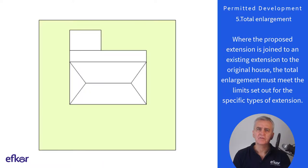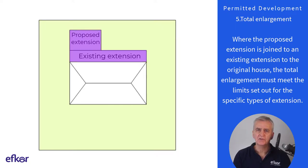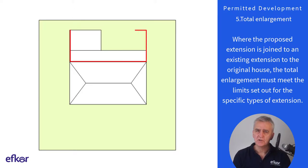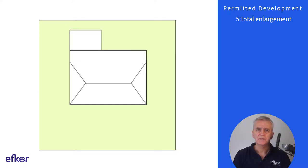Condition five: the total enlargement. Where the proposed extension is joined to an existing extension to the original house, the total enlargement must meet the limits set out for the specific types of extension. These limits are detailed in the later more focused videos.